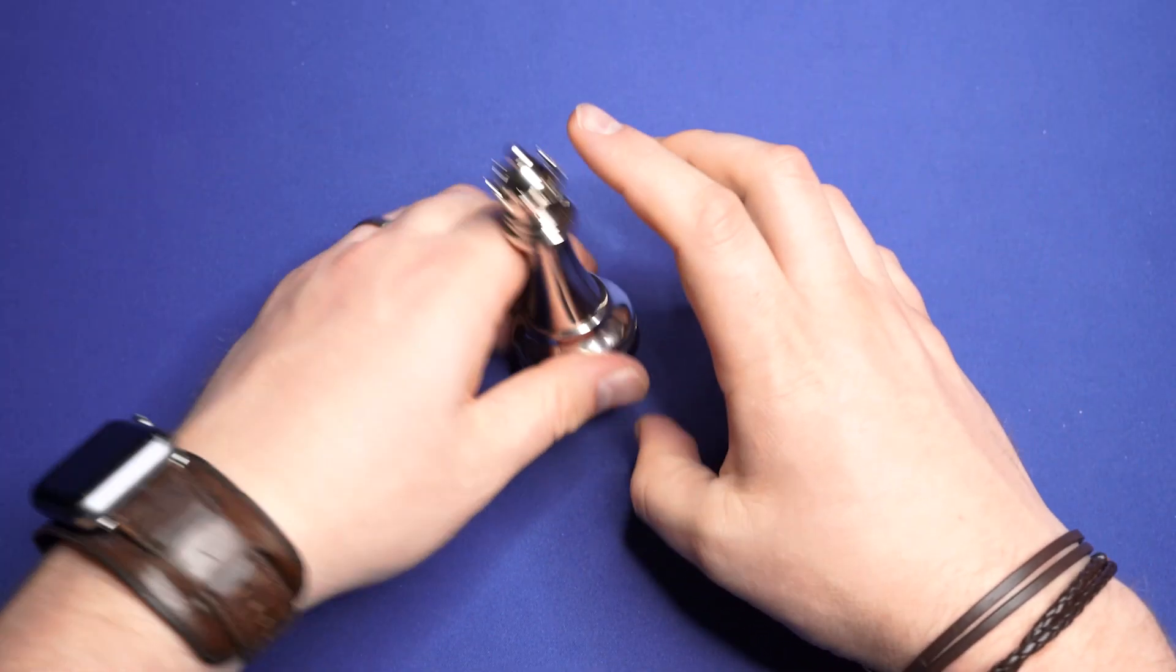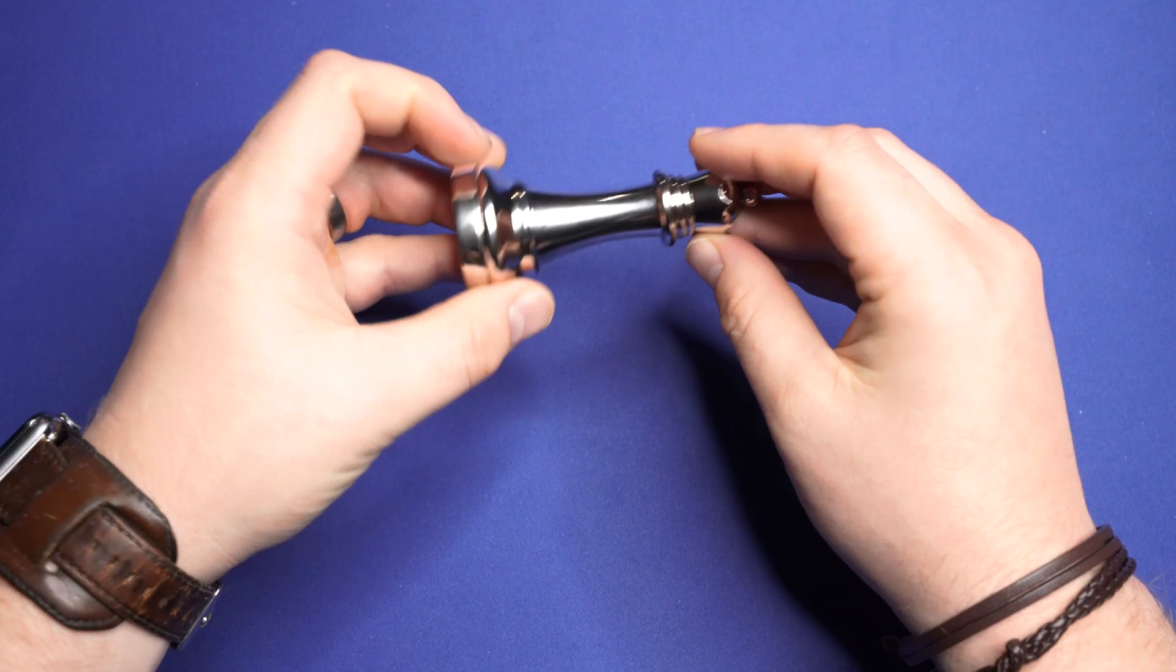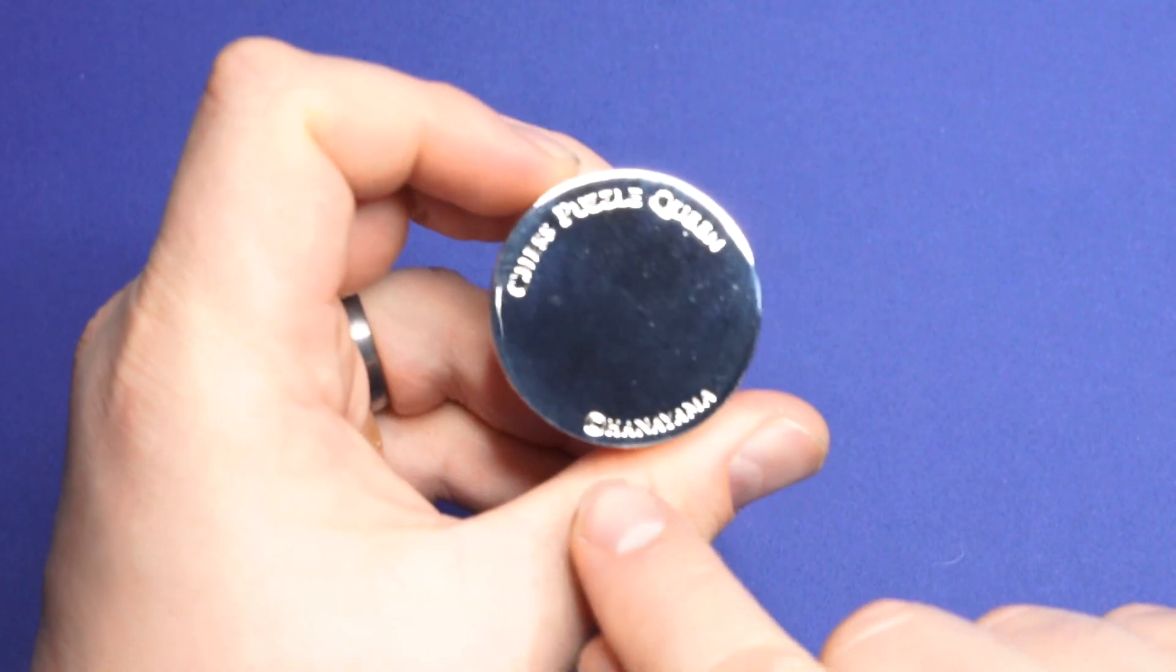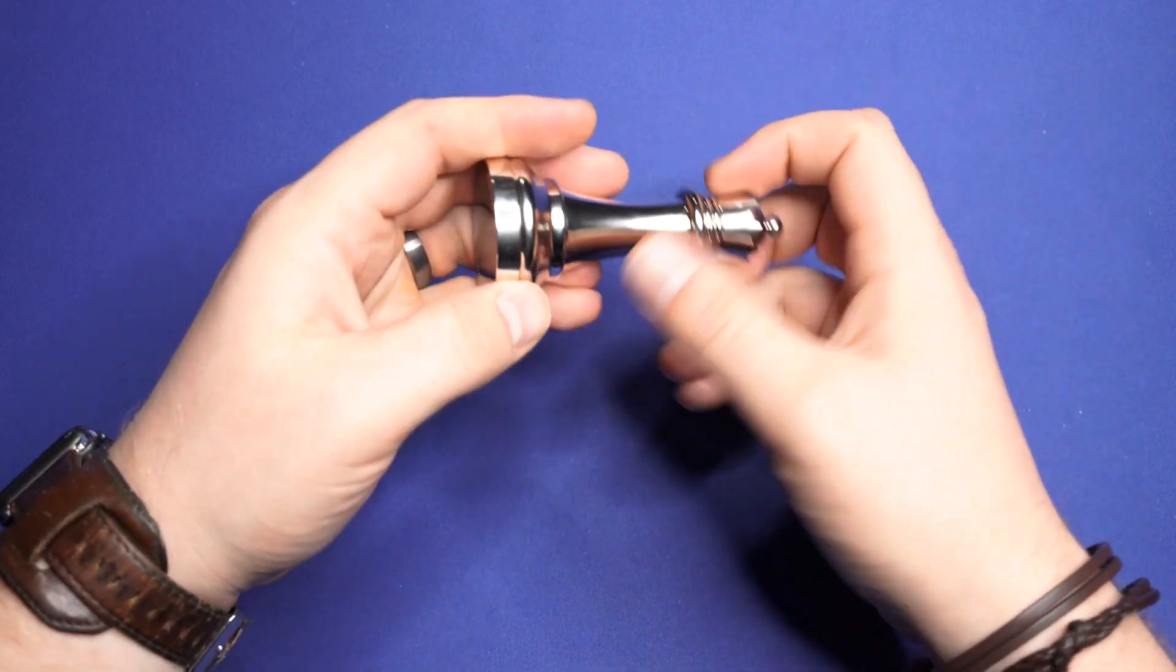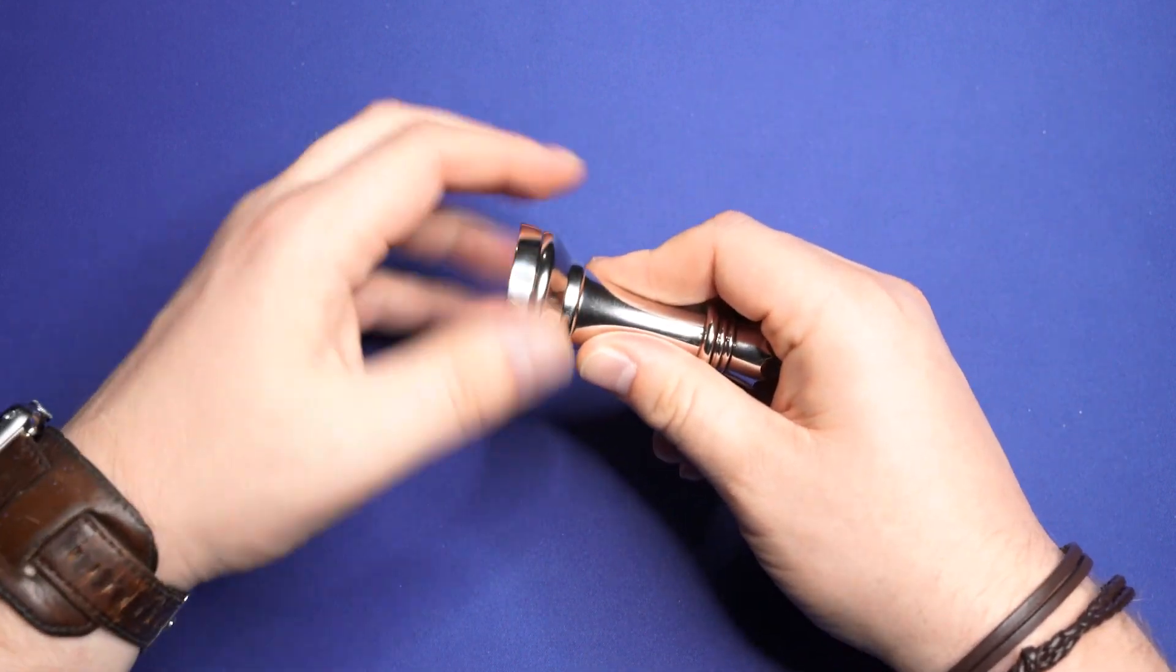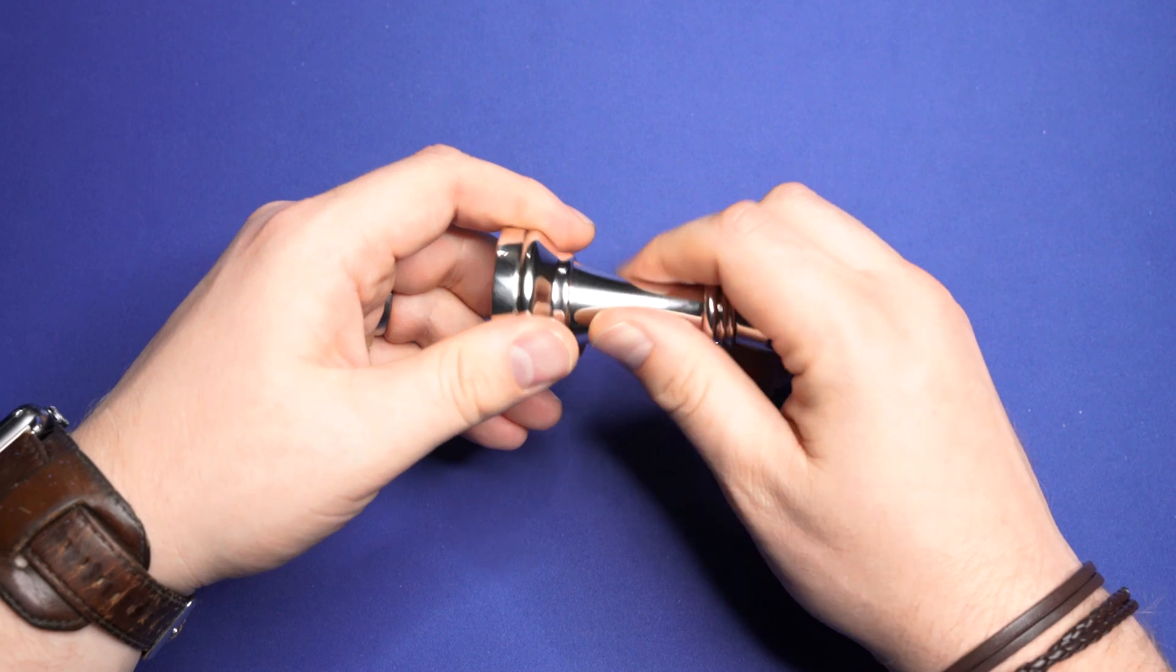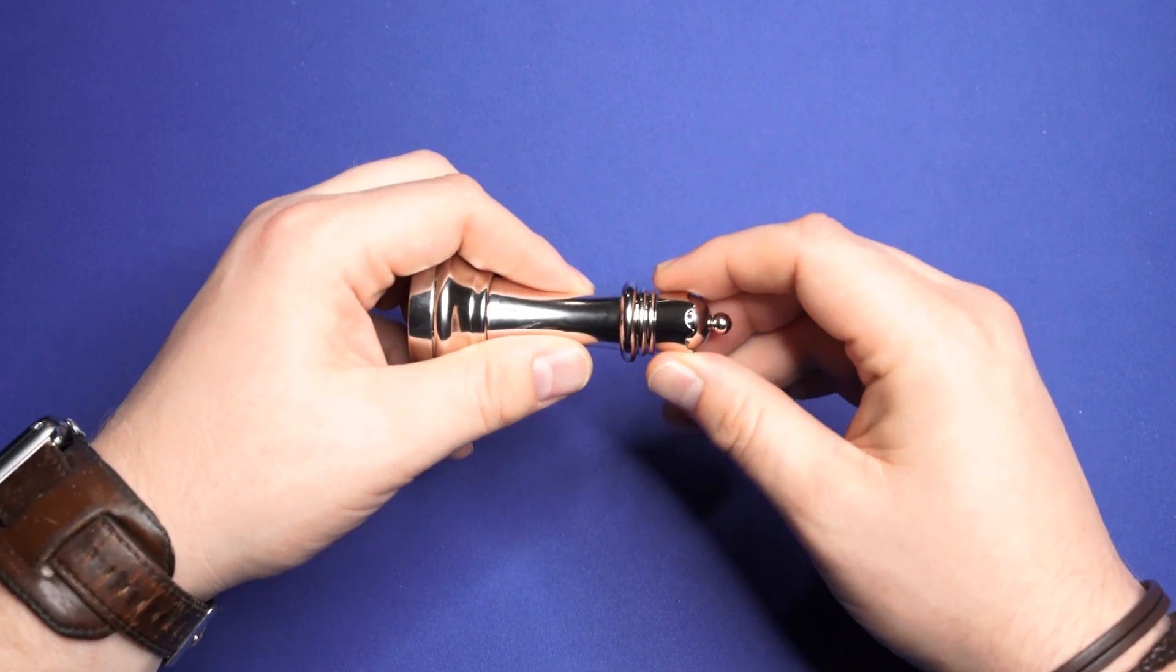Alright, here is the Hanayama Chess Puzzle Queen. You can see on the bottom, Hanayama Copyright, Chess Puzzle Queen. And it's pretty simple. It consists of three parts: a bottom that rotates, a middle that rotates, and a top that's spring-loaded.